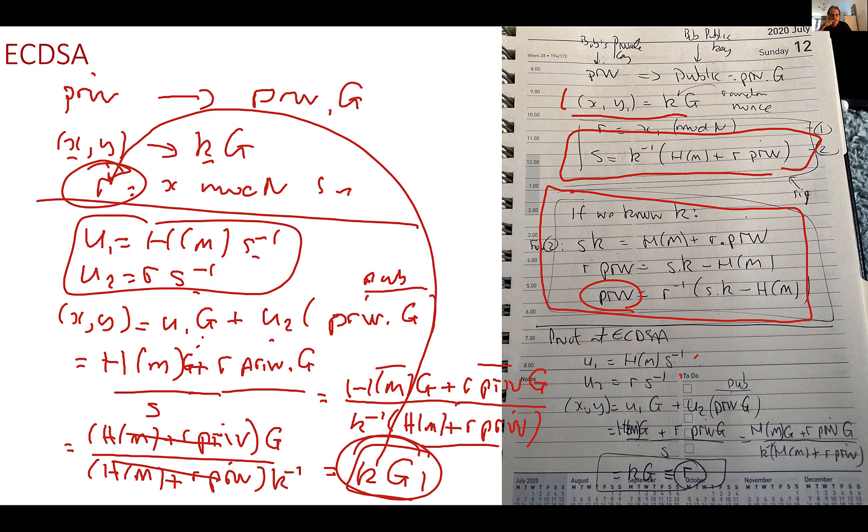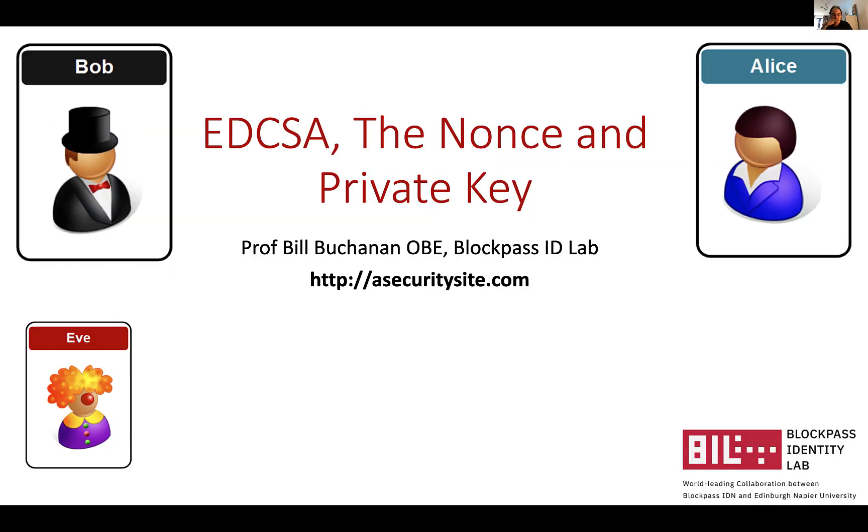Okay so that's how ECDSA works but you can see here we have a risk if the nonce value is released or known for just one of the signatures then Eve can calculate the private key that signed it. Okay so that's been a quick outline of ECDSA.